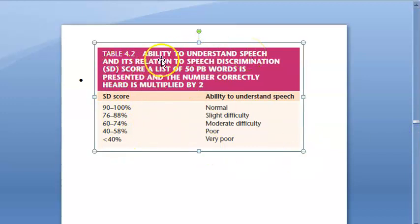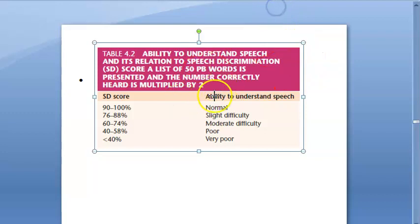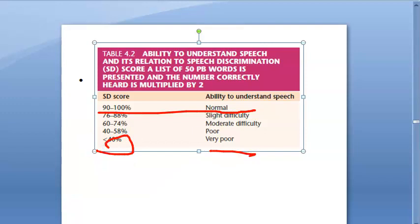A list of 50 phonetically balanced words is presented, and the number correctly heard is multiplied by 2 to get the percentage score. A score of 90 to 100 percent is normal. A score below 40 percent is considered very poor.